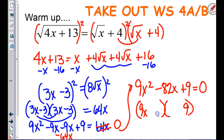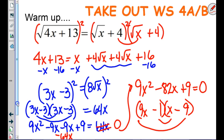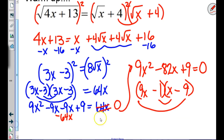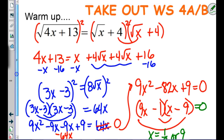To get 82 in the middle: if we had 9x times 9 and 1x times 1 we'd have 81, and 1 and 1 would be 82 — that works. Setting each factor equal to zero gives solutions of 1/9 or 9.